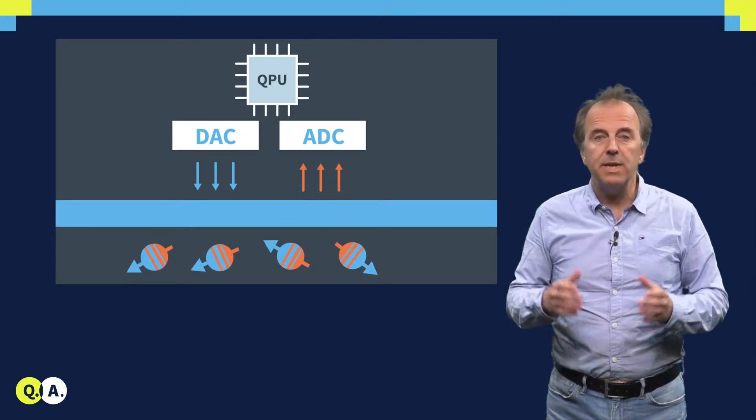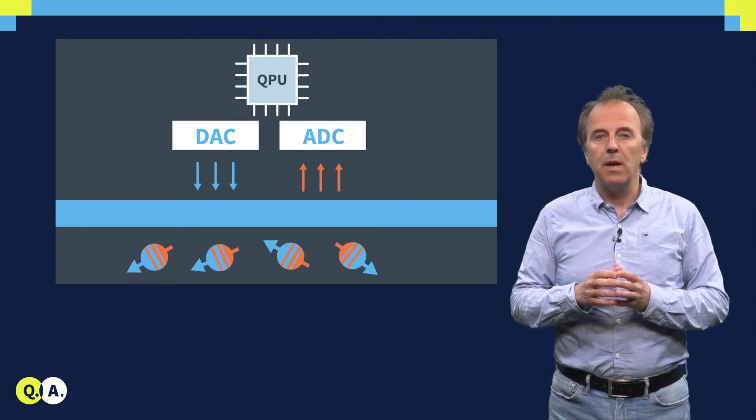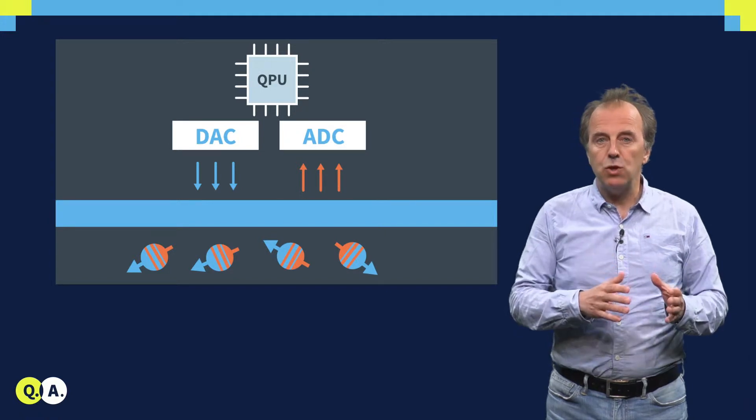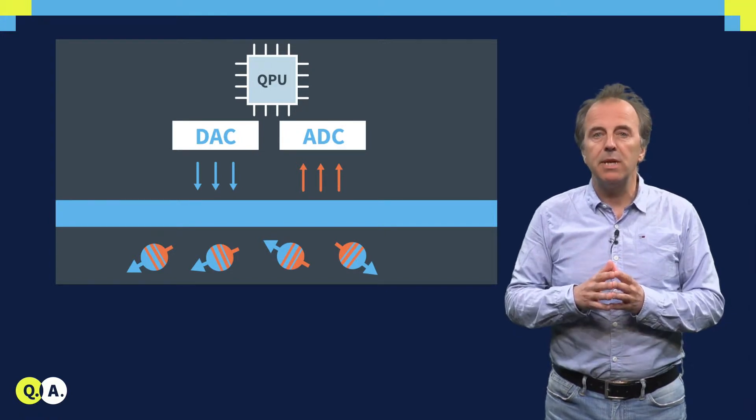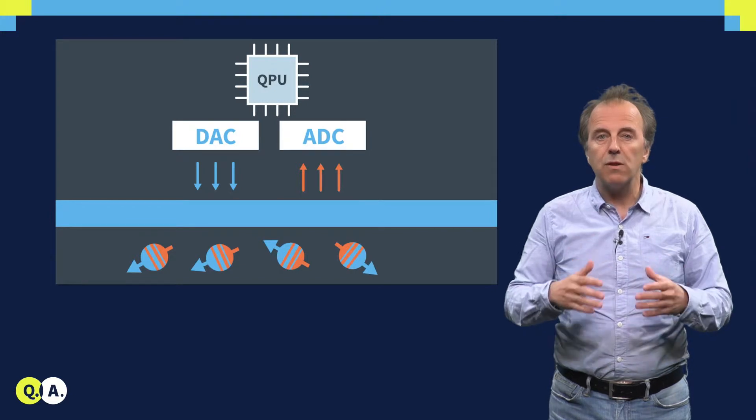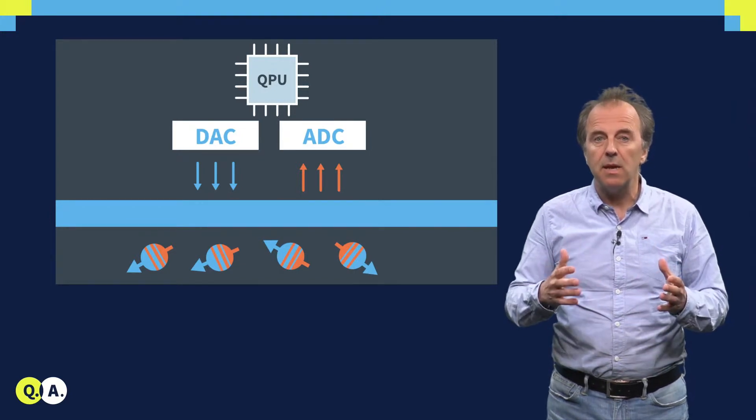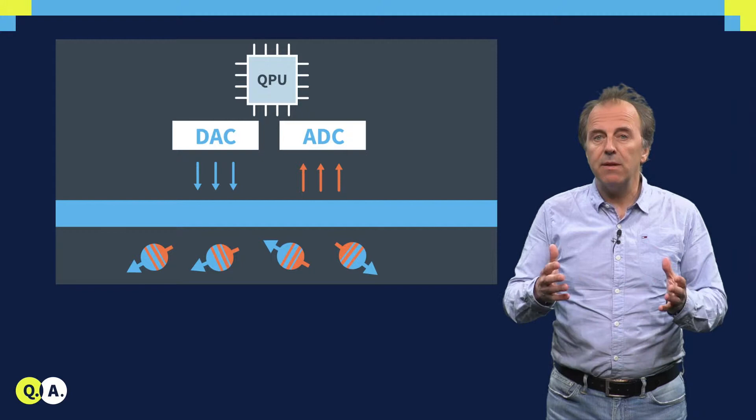This again shows the non-deterministic way of quantum computing. Even though the largest amplitude implies the highest probability for being read, it will happen that several runs of the same algorithms are needed, and each time at the end of the algorithm,